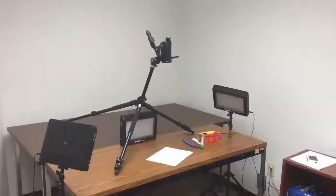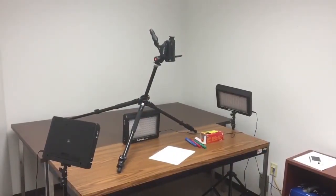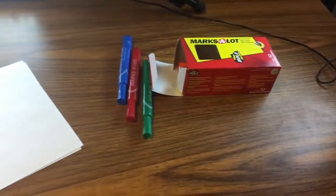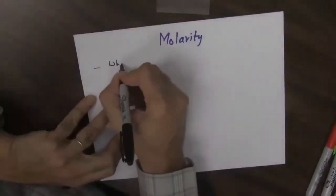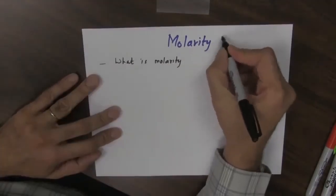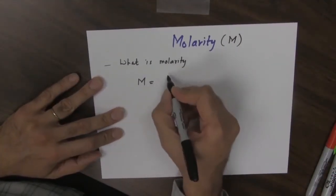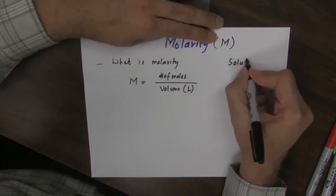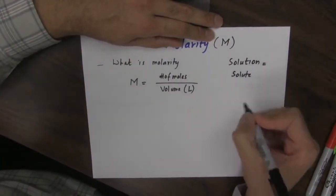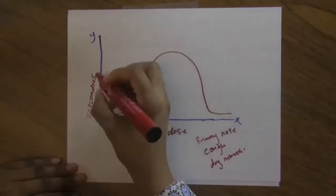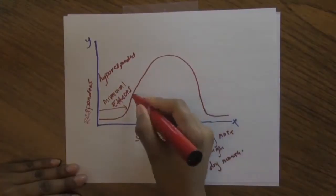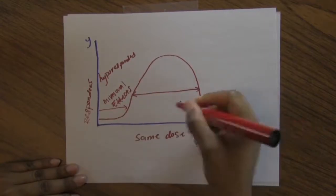First, let's talk about the shaky hand table. It's a combination of light, camera, and action. When the camera is on, the lecturer will use colorful markers to write a lesson on the blank space. This is the same as writing on the blackboard and is totally helpful for online teaching.